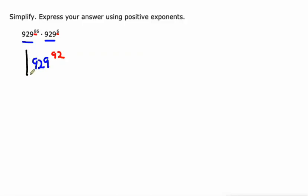We're being asked to express our answer using positive exponents. You put that in your calculator, it can't handle that big of a number anyway, so we're gonna have to leave it like that: 929 to the 92nd power.